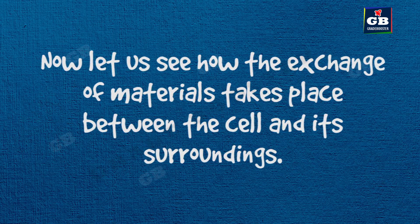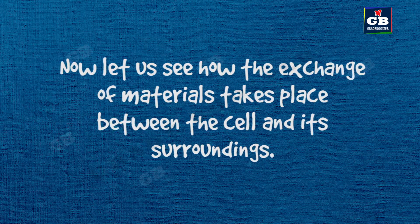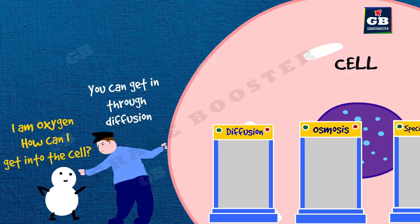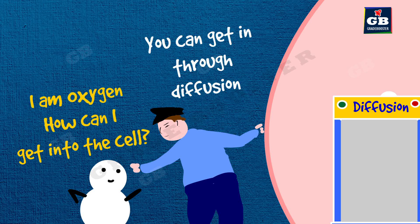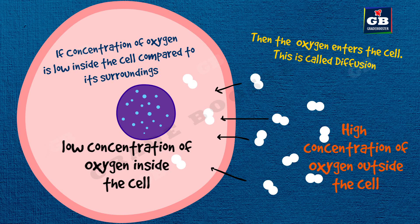The exchange of gases takes place between the cell and its surroundings through a process called diffusion. Diffusion is the movement of gas molecules from a high concentration area to a low concentration area.